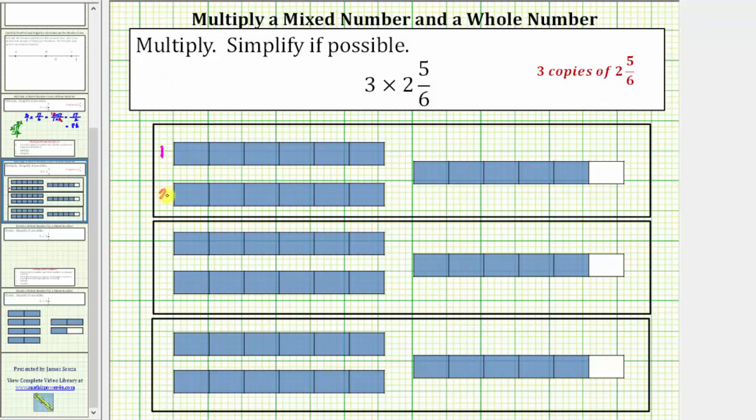Now to determine how much we have here, we have 1, 2, 3, 4, 5, 6. Now here we have 5/6. One more sixth would give us 6/6 or 1, so 5/6 plus this 1/6 gives us another unit, which would be 7. And here we have 4/6 plus 2/6 here would give us 6/6 or another 1, which gives us 8.